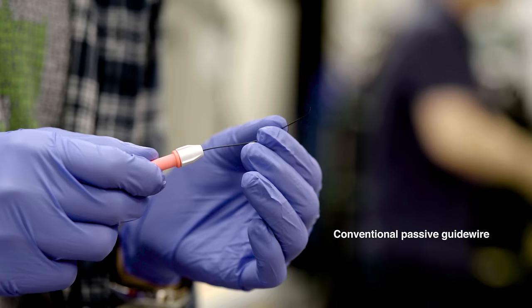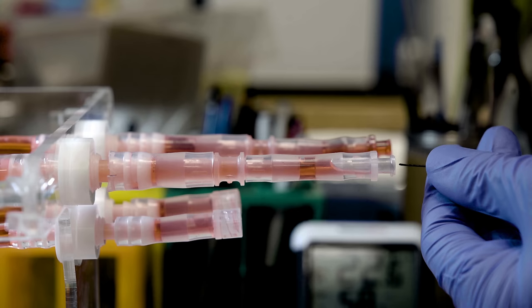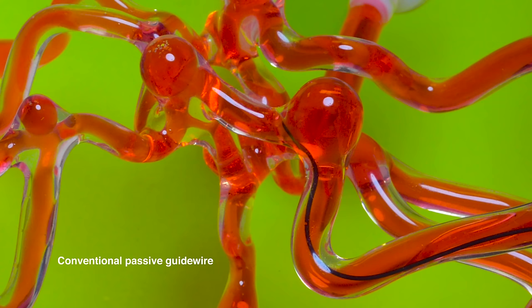To clear blood clots in the brain, doctors often perform a minimally invasive surgery in which a surgeon inserts a thin wire through a patient's main artery, typically in the leg or groin, then manually manipulates the wire up to the damaged brain vessel.